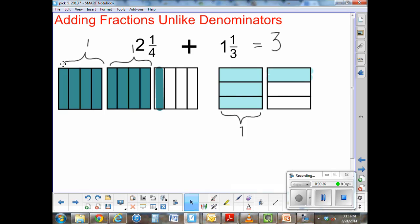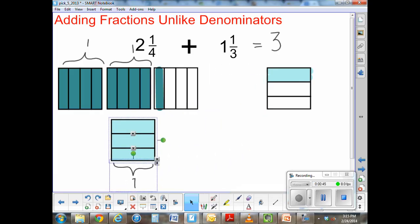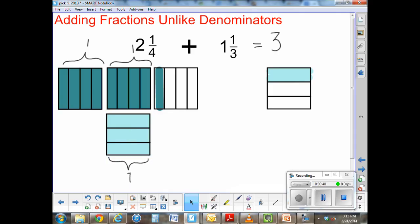Now on to what's left over, the fractions. Now how am I supposed to add them if they are partitioned differently? I have one that is partitioned into fourths and one that is partitioned into thirds.